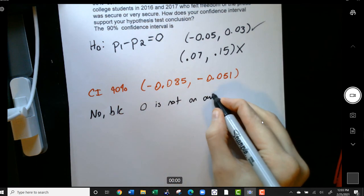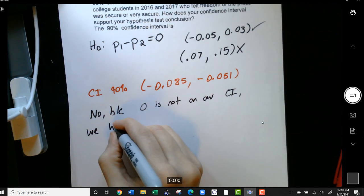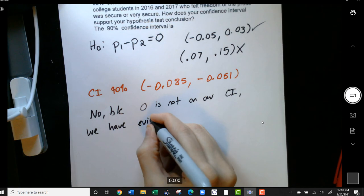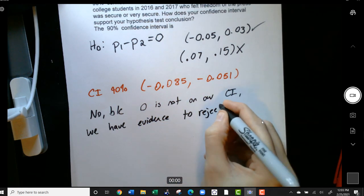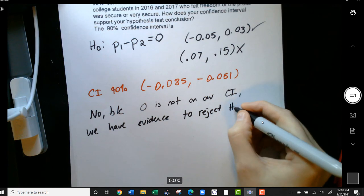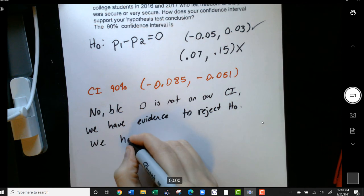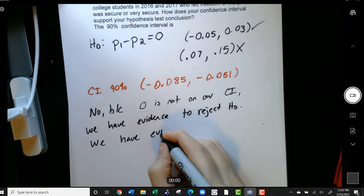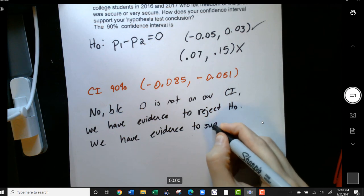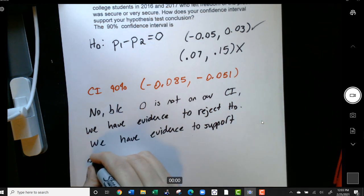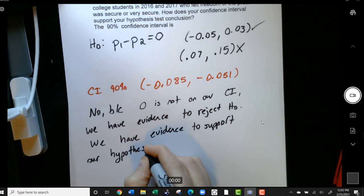So we would say no, because zero is not on our confidence interval, we have evidence to reject H0. Another thing is that we could say we have evidence to support our hypothesis test conclusion.